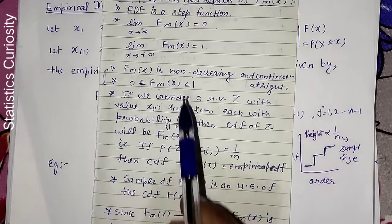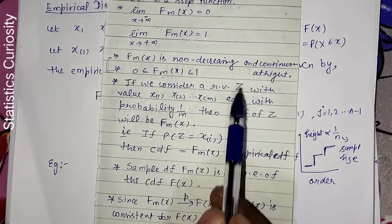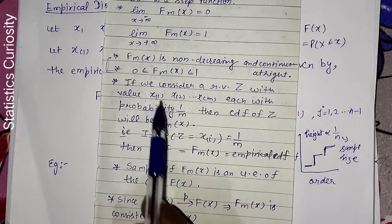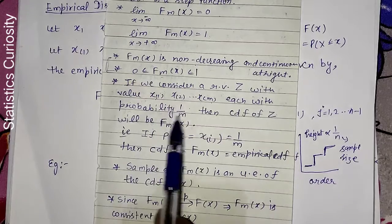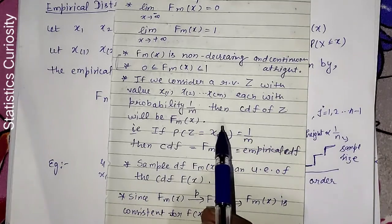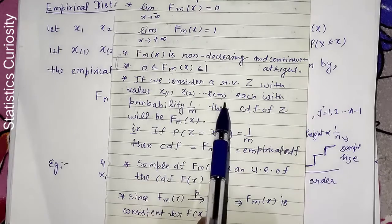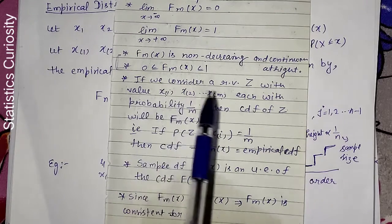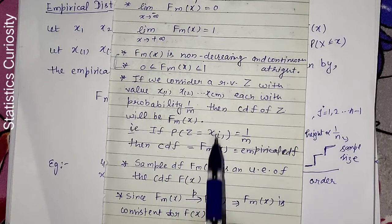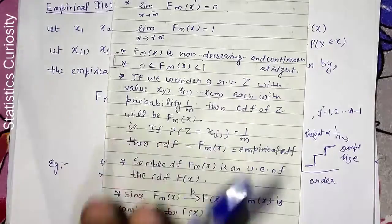The fourth property is that the empirical CDF lies between 0 and 1. The fifth property: if we consider a random variable Z taking values x(1), x(2), ..., x(m) — the order statistics — each with probability 1/m, then the CDF of Z will be FNx. This is simply another way of writing the definition of the empirical CDF: each observed value arranged in ascending order has probability 1/m, and the CDF of this discrete uniform variable equals the empirical CDF.